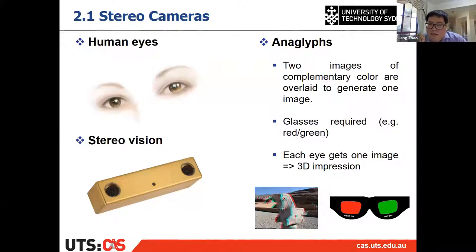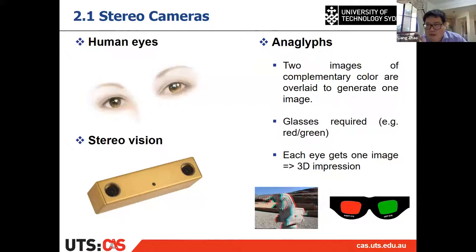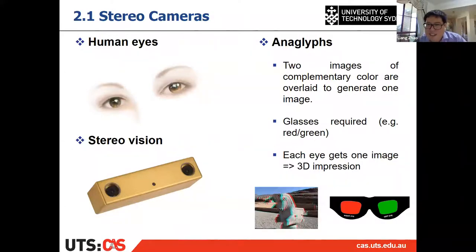For the right eye, because it has the green glass, you can only see the green image. So for each of your eyes, you see a different image from the same combined image. Because there is some kind of movement or difference between the two images, you can see the picture in 3D. That is the very initial form of stereo vision, or 3D vision.